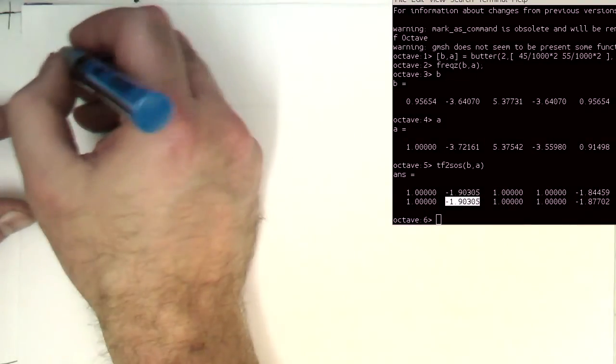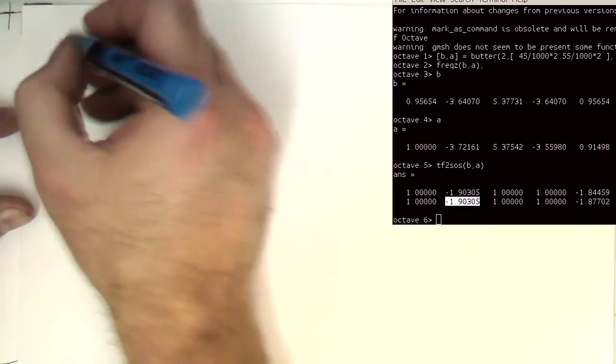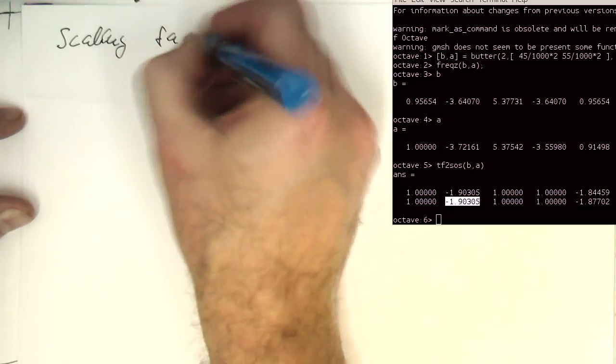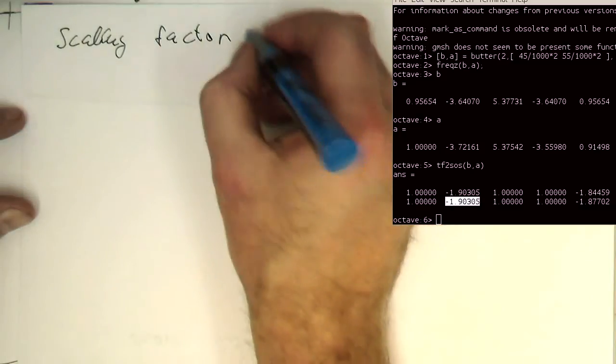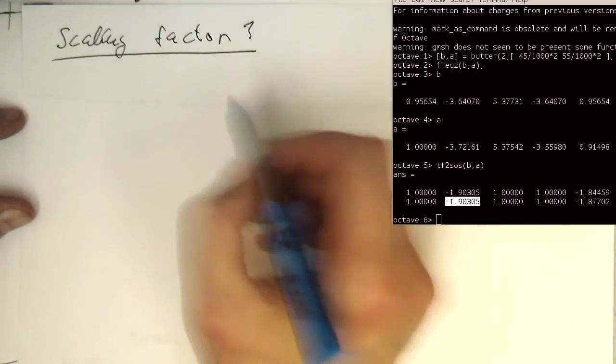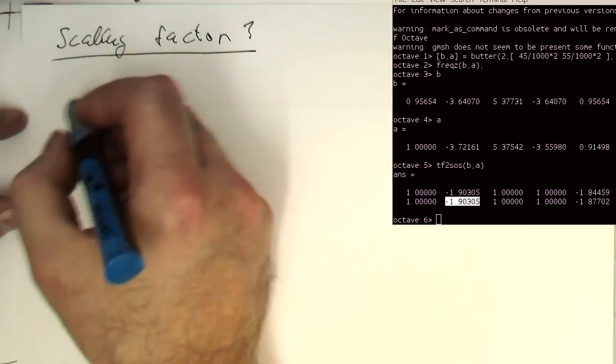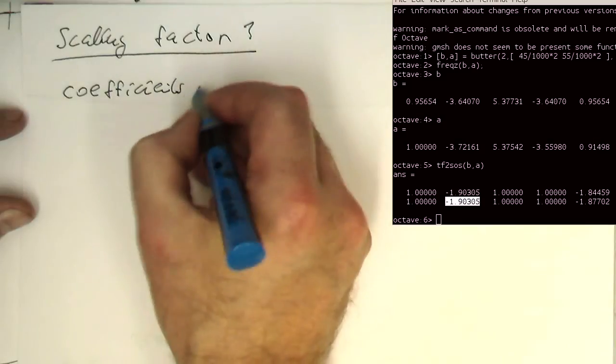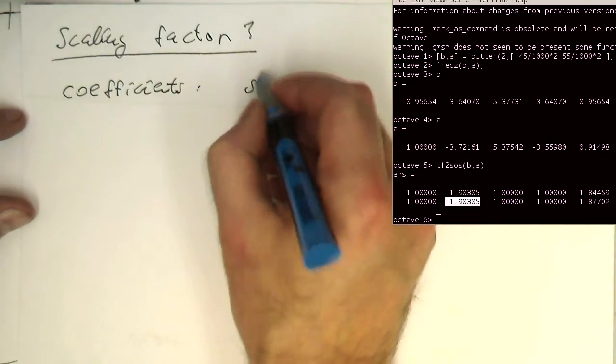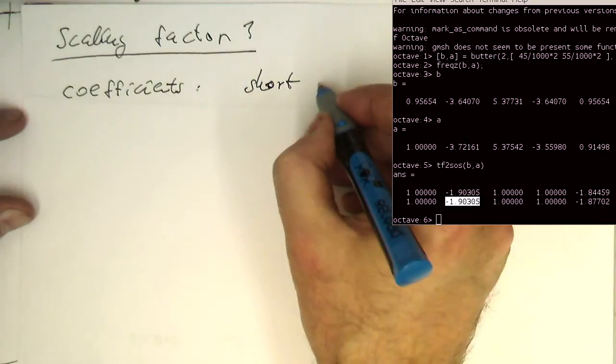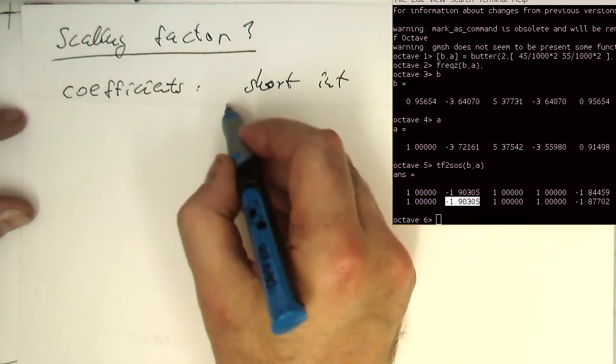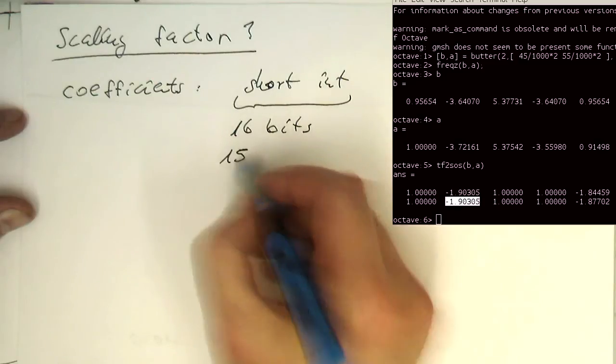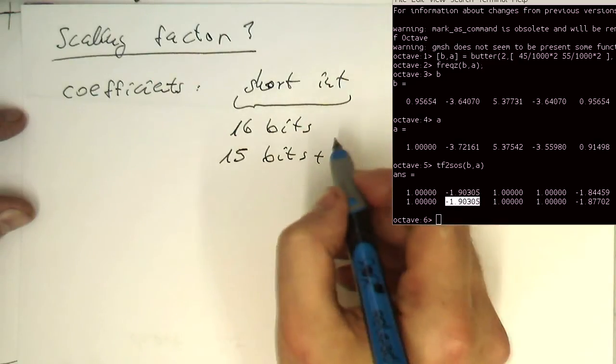So what is the best scaling factor? Remember the coefficients are represented as short integer. Short integer means 16 bits, or 15 bits actually, plus sign.